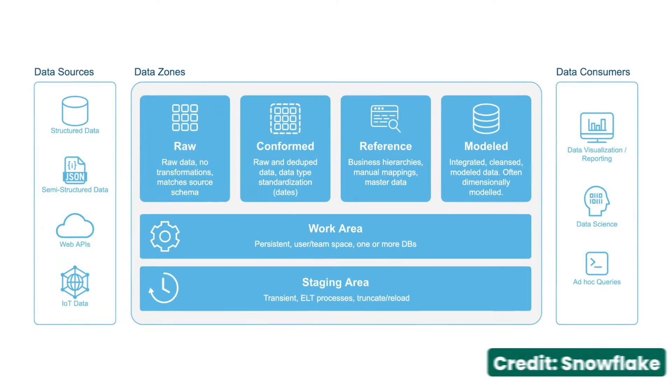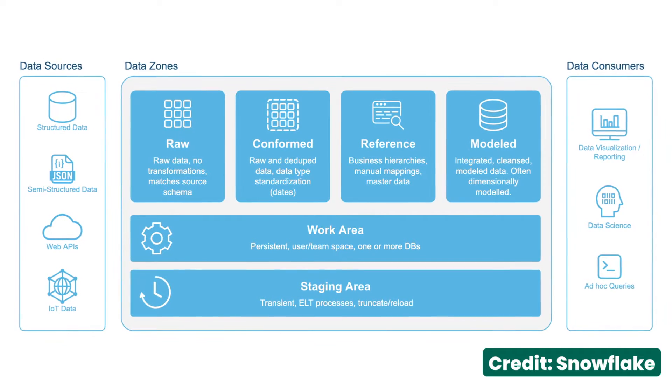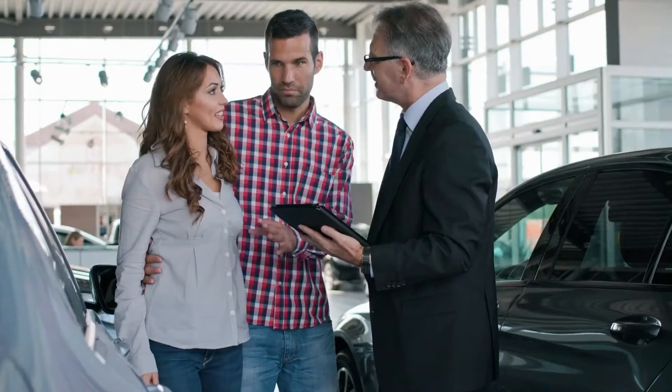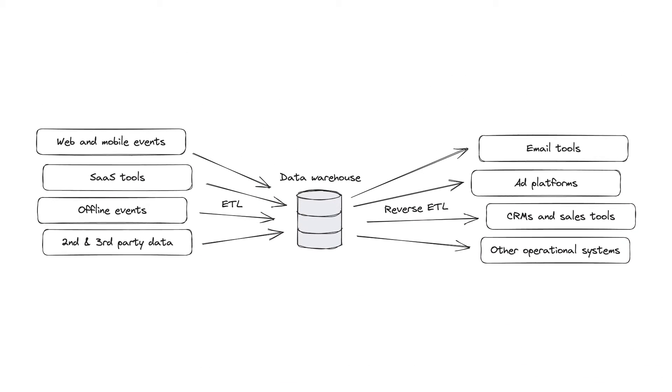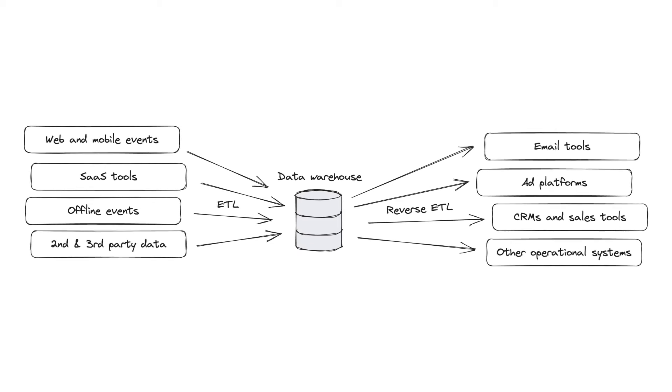The idea of reverse ETL actually changes the way that data warehouses are used altogether. Typically in an enterprise environment, the data warehouse is used for analytics, reporting, and business intelligence. But as the importance of data grows, it needs to be used in all the operational day-to-day processes of every part of a business. Reverse ETL flips the process — taking data from the data warehouse and moving it back into the operational systems where different business teams are doing their work.